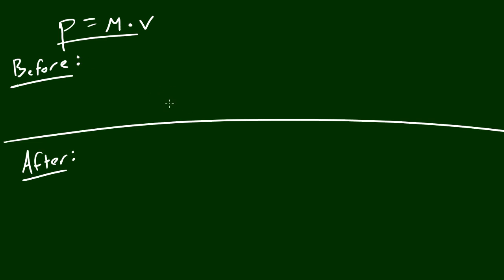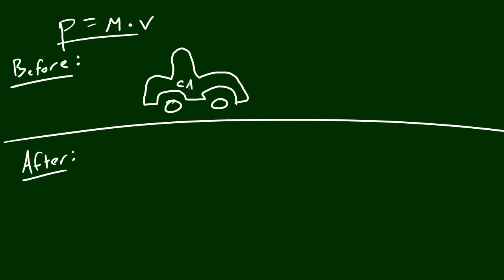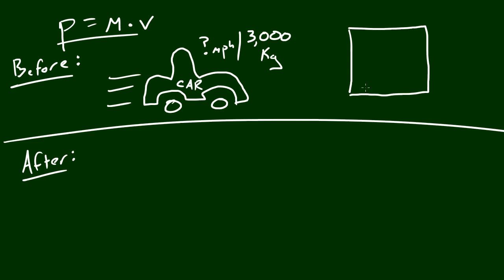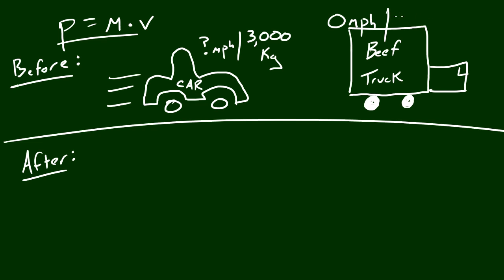So this is the information they gave us. Before the crash, there was a car with a drunk driver. His name was Al, but that's not important. This car was traveling at some velocity that we need to figure out, so I'm going to write question mark miles per hour. However, the car had a mass of 3,000 kilograms. He also told us that it crashed into a truck — a beef truck — which was parked, so it has a velocity of 0 miles per hour. It had a mass of 6,000 kilograms.